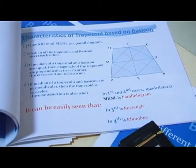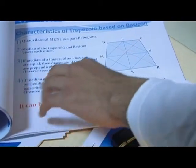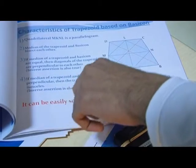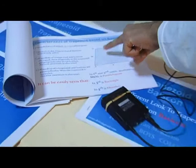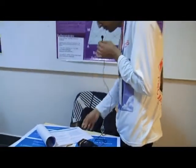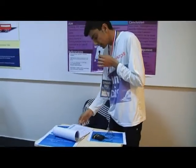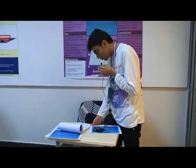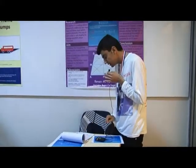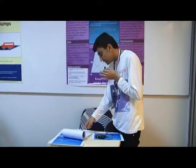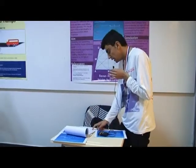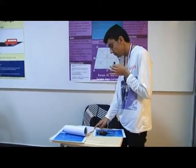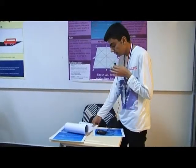The inverse assertion is also true: if the median of the trapezoid and the base gun are perpendicular, then the trapezoid is isosceles. All in all, in the first and second examples, the quadrilateral MKNL is a parallelogram; in the third it is a rectangle; and in the fourth it is a rhombus.